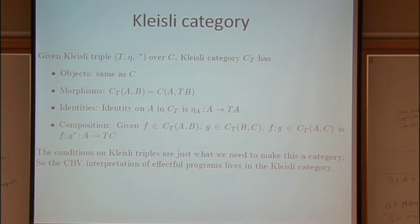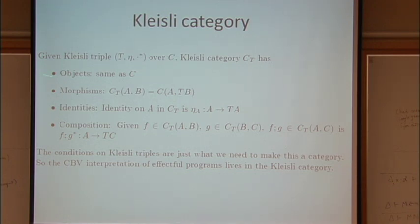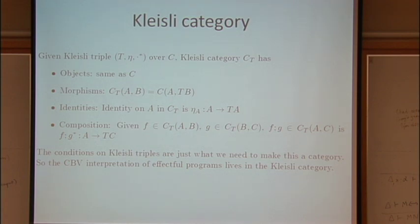The identity in the Kleisli category is given by eta of the triple. For composition, if we have F in C_T from A to B and G from B to C, the extension operator does the job exactly. We first do F — getting from A to T of B — then star G to go from T of B to T of C, and then perform the composition to get from A to C. The conditions on Kleisli triples — the triangles about eta of T being the identity on T — are exactly the conditions saying that this Kleisli category is a category. The shape of morphisms in the Kleisli category from A to B are maps from A to T of B, which is exactly the shape of the call-by-value translation. So the call-by-value interpretation of effectful programs can be seen as living in the Kleisli category.